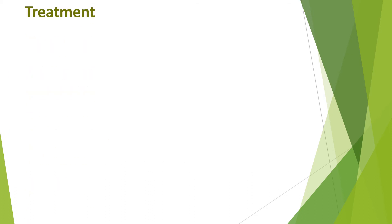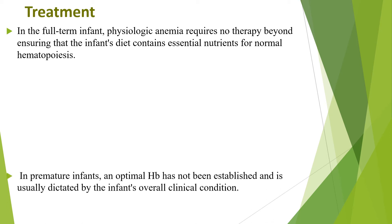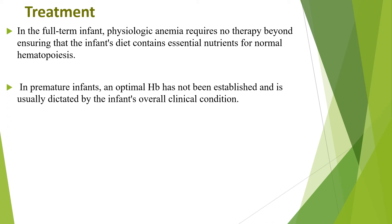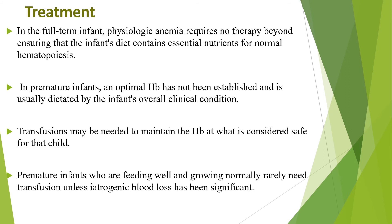Regarding treatment of physiologic anemia of prematurity: in the full-term infant, physiologic anemia requires no therapy beyond ensuring that the infant's diet contains essential nutrients for normal hematopoiesis. In premature infancy, an optimal hemoglobin has not been established and is usually dictated by the infant's overall clinical condition. Transfusion might be needed to maintain the hemoglobin at a level considered safe for that child. Premature infants who are feeding well and growing normally rarely need transfusion unless iatrogenic blood loss has been significant.